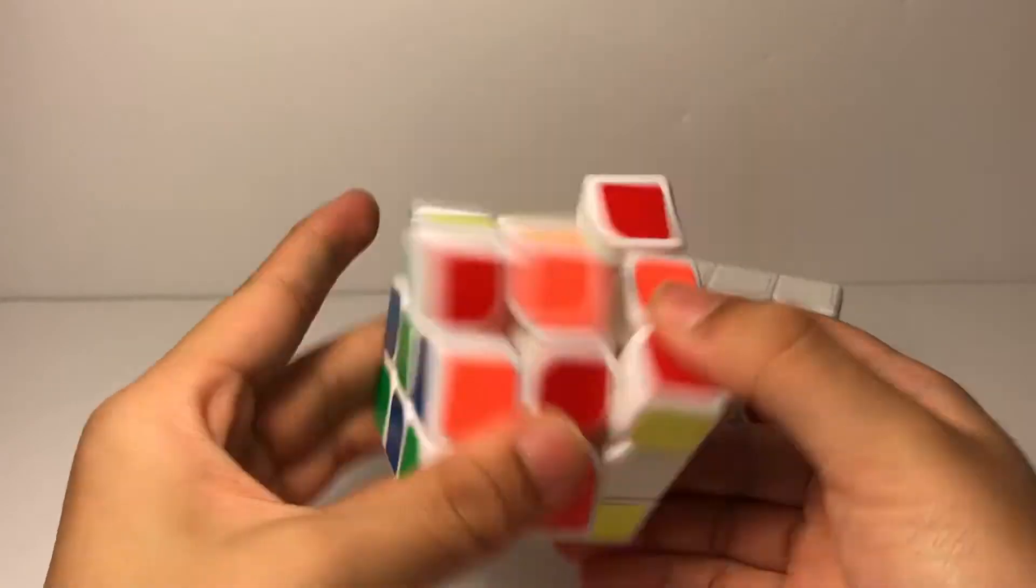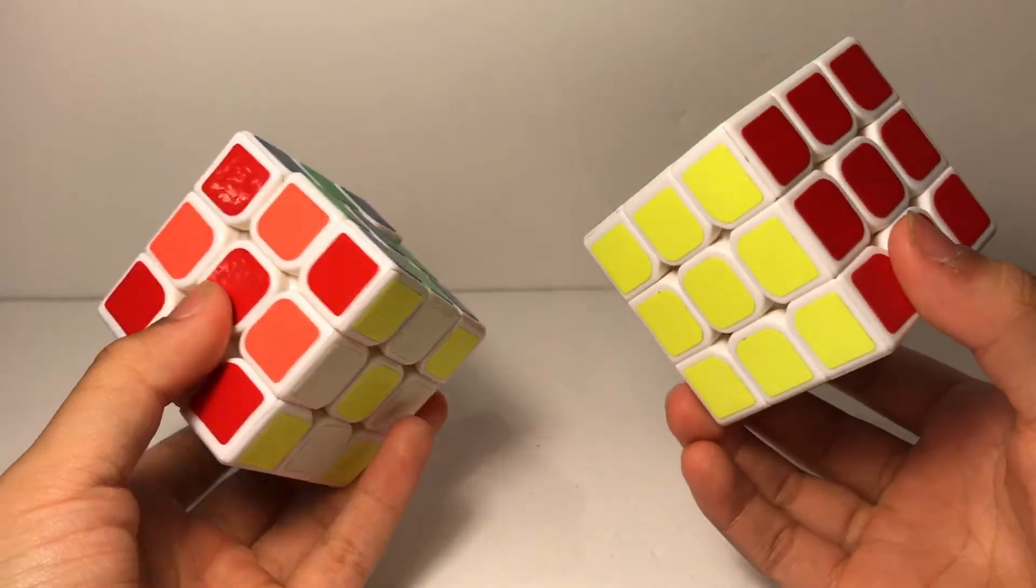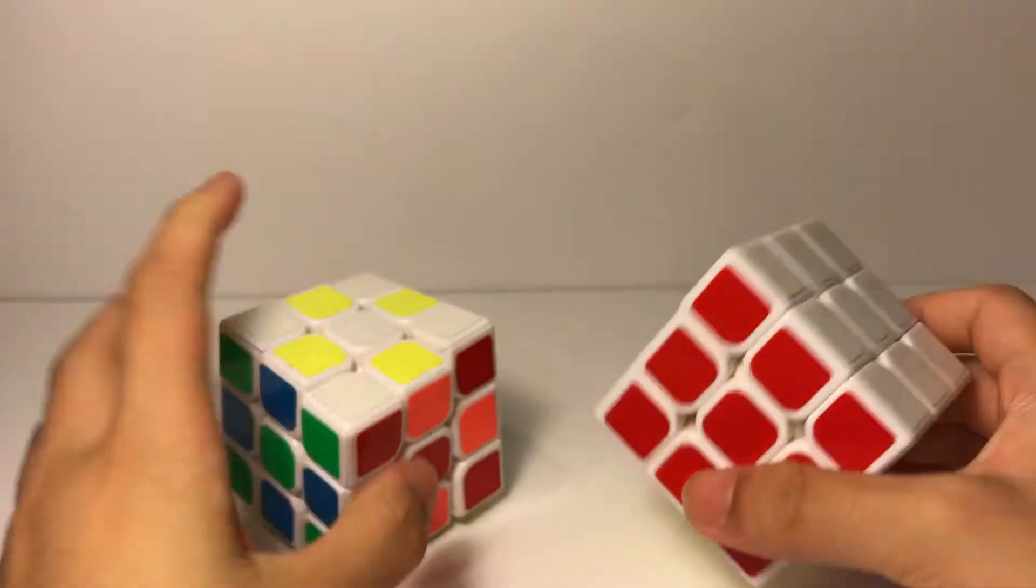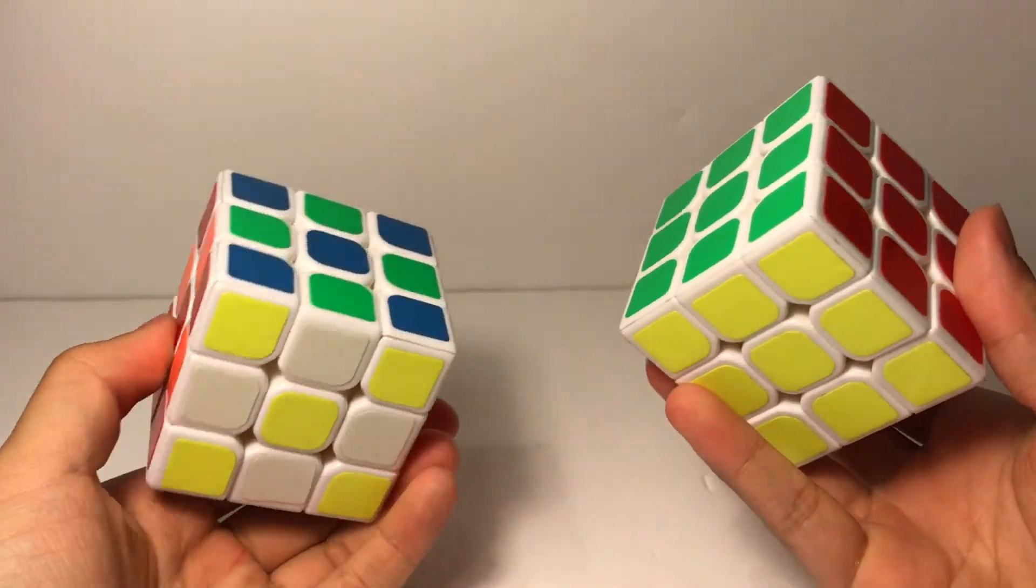They both had the same corner cutting because of the same mechanism. But somehow, the V2 was much more stable. It retained its cube shape much better than the V1 did. And that begs the question, why does the V2 feel so different?